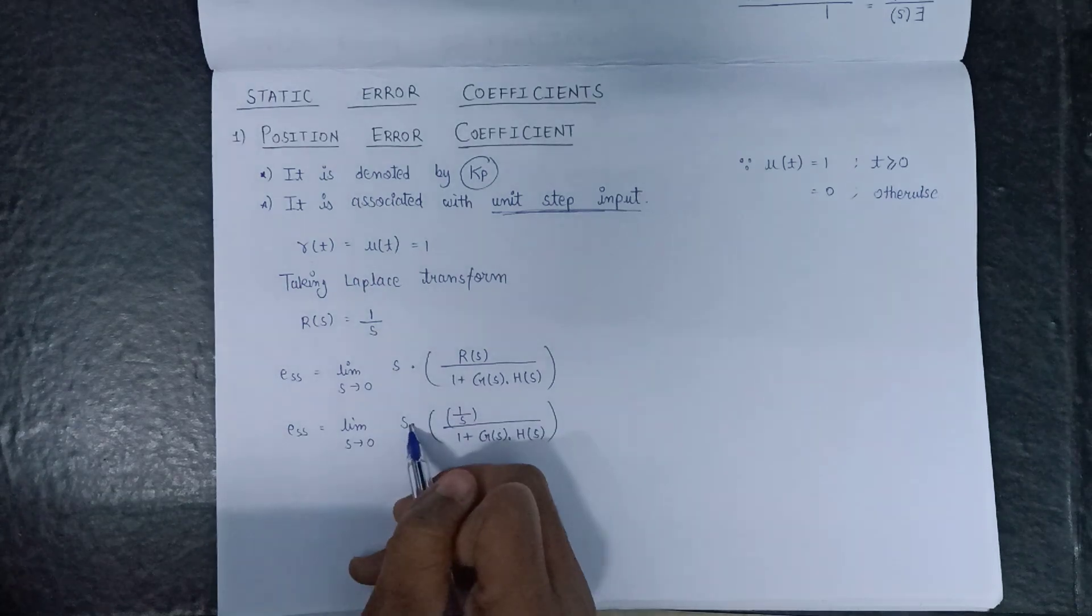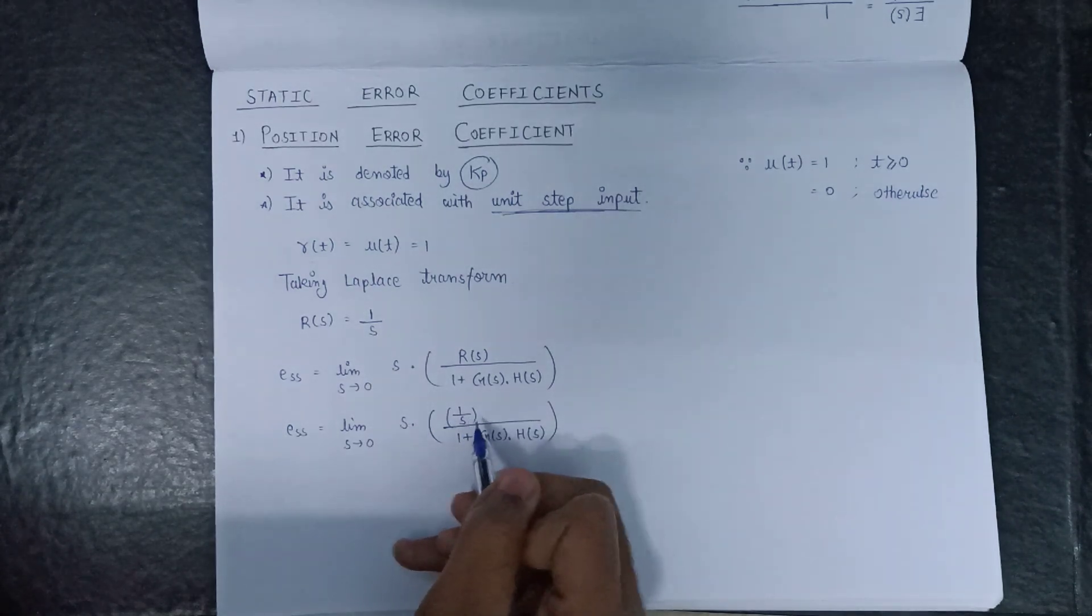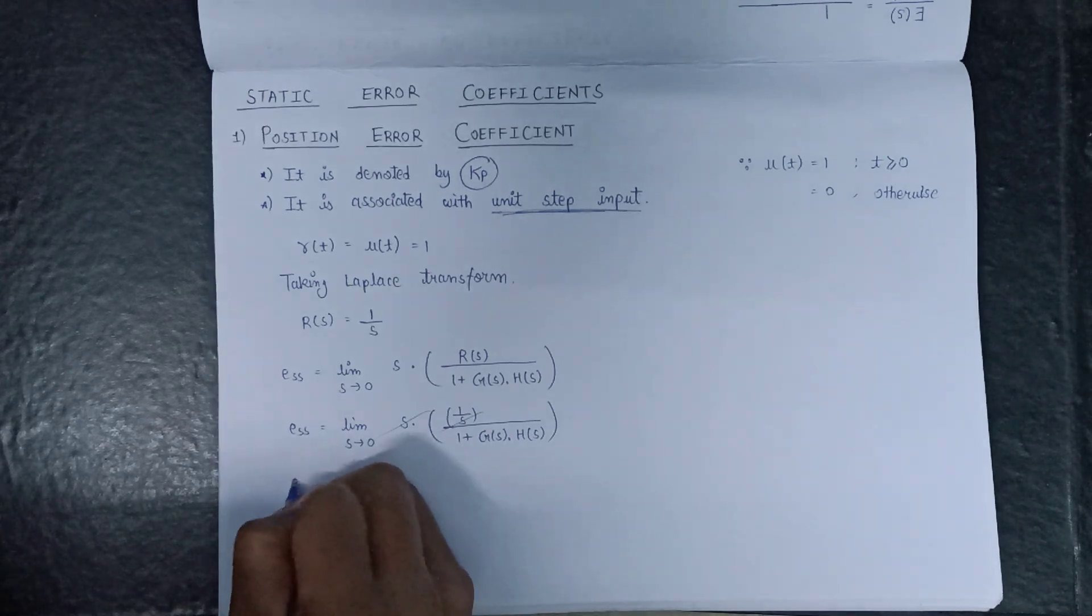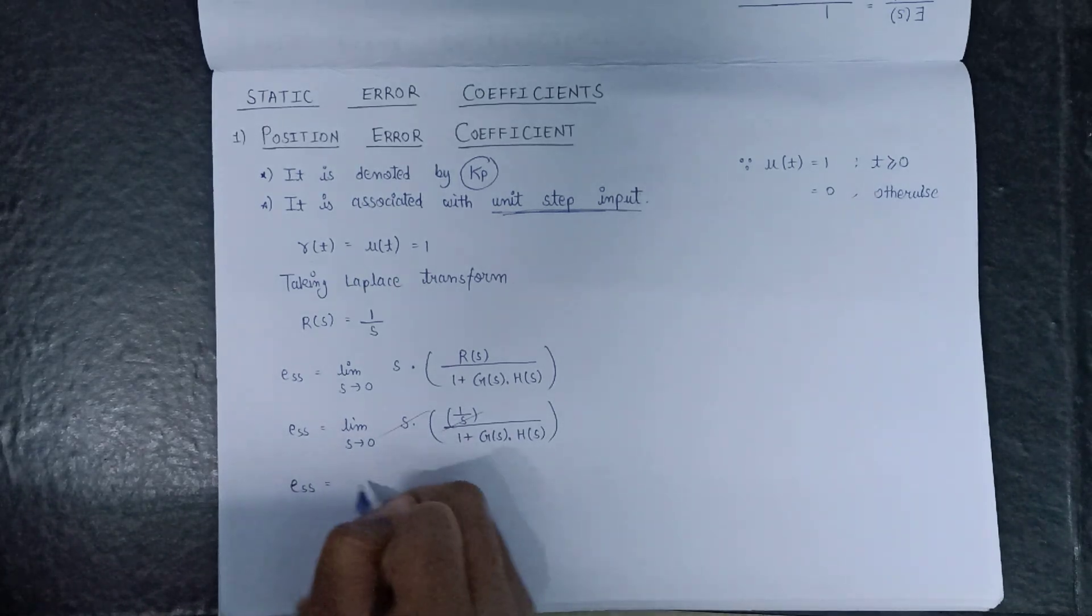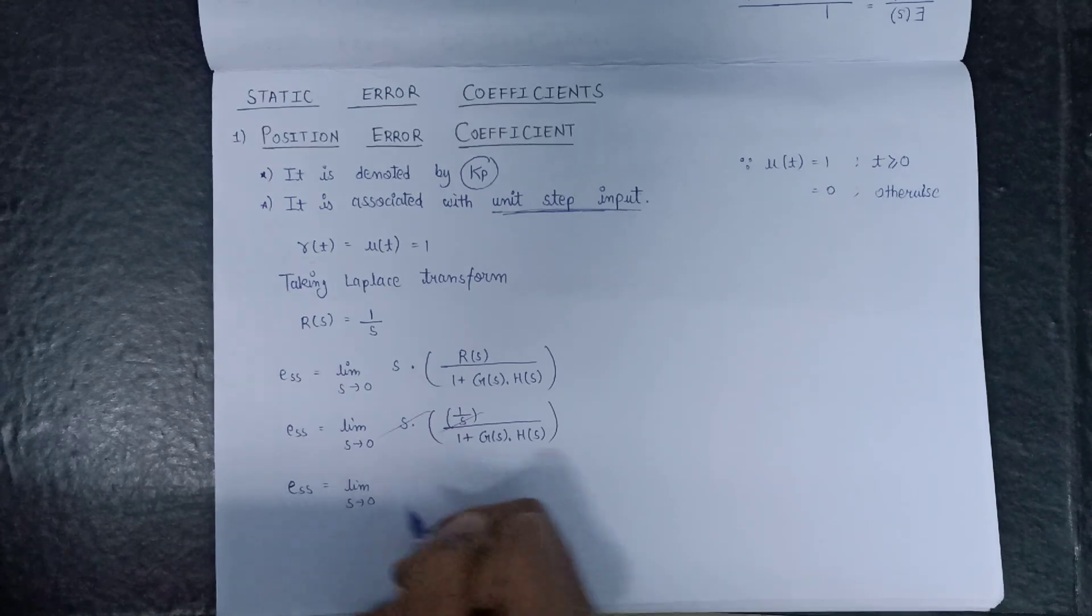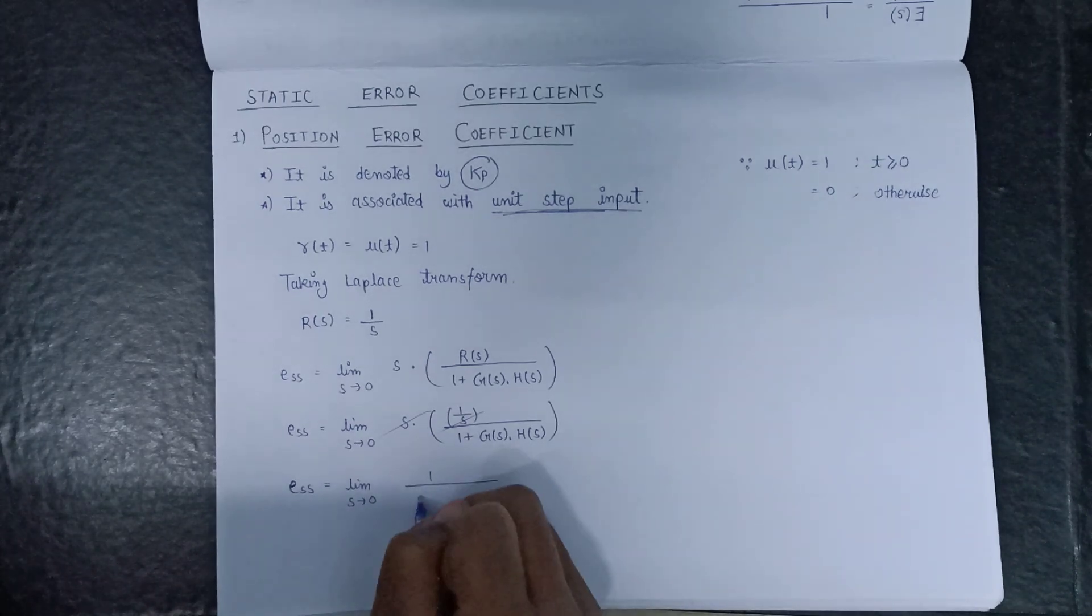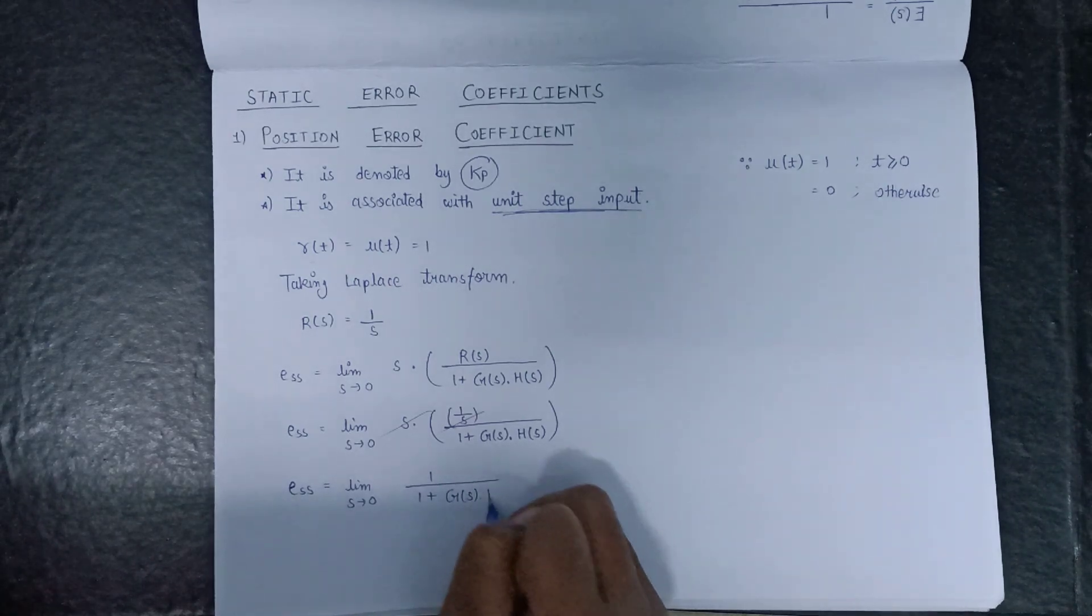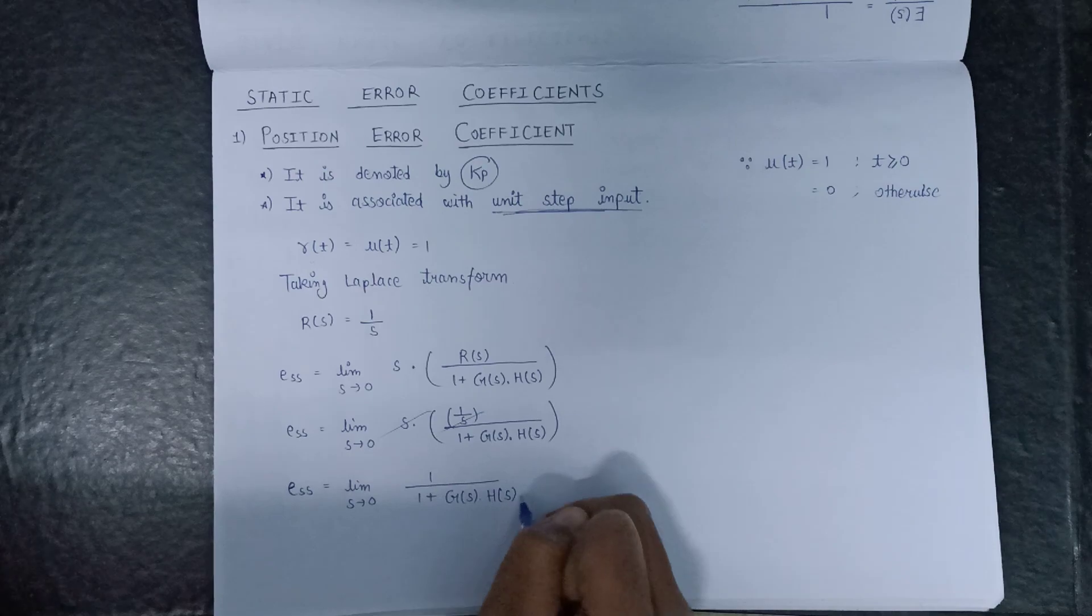So this s will be cancelled out with this s in the denominator. E(s) will become limit s tends to 0, 1 over 1 plus G(s) into H(s).